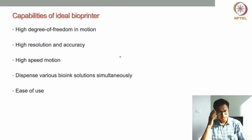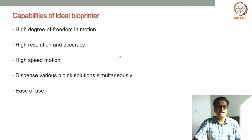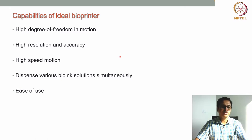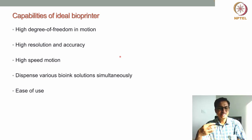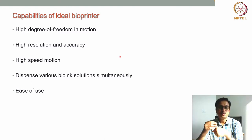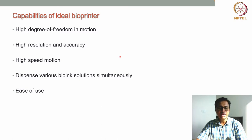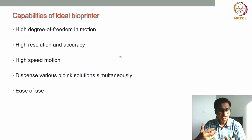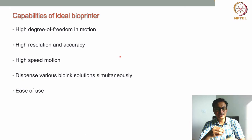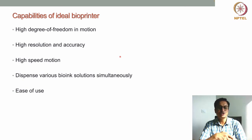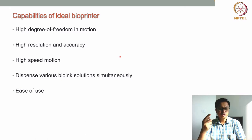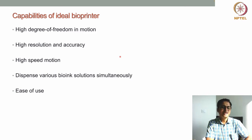Another requirement is the ability to dispense various bioinks simultaneously. All our tissues have more than one type of cell — they are multicellular constructs. So if I want to print three different cell types in particular locations, I should be able to dispense three different bioinks containing different cell types simultaneously to print a multicellular construct.